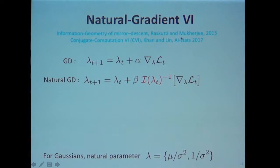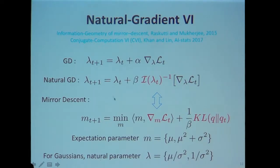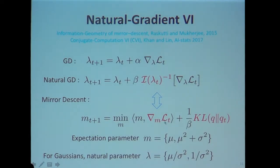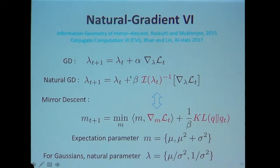We use a result from the Raskutti and Mukherjee paper showing that natural gradient descent can be performed via a mirror descent problem. Instead of the natural parameter, you go to expectation parameters — for a Gaussian, those are the first and second moments. You then write the mirror descent problem in this space with a first-order approximation and change the geometry from Euclidean to a Bregman divergence — specifically KL divergence. This paper shows that each step of this mirror descent is exactly equal to natural gradient descent.